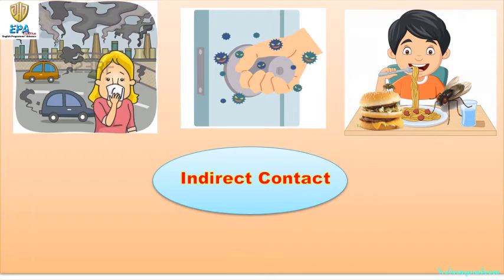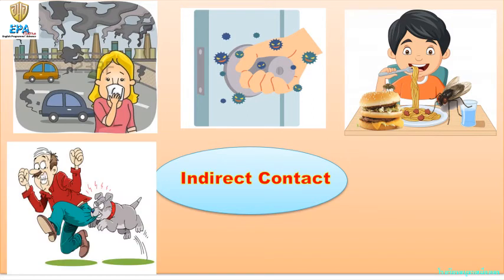Eating dirty or contaminated foods is another way diseases are transferred. Animal bites, scratches, or even licks can also be a possible way to transfer diseases. Animals can be carriers of disease-causing germs, and when they bite, scratch, or even lick us, the germs can be transferred to us.